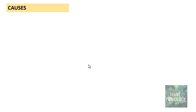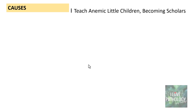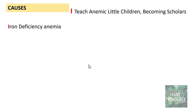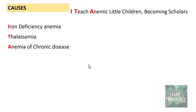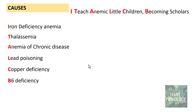Now let's look into various causes of microcytic hypochromic anemia. A simple mnemonic to remember them is: 'I teach anemic little children becoming scholars.' I is for iron deficiency anemia, T for thalassemia, A for anemia of chronic disease, L for lead poisoning, C for copper deficiency, B for B6 deficiency, and S for sideroblastic anemia. Of these, iron deficiency anemia, thalassemia, and anemia of chronic disease are the most common causes.